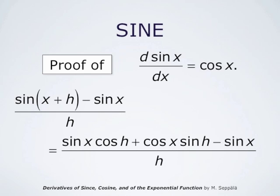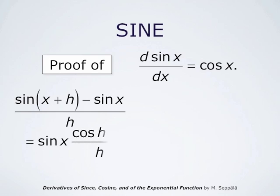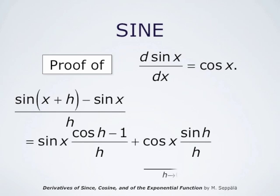In the numerator, we take sin x as a common factor of the terms sin x cos h minus sin x, leaving sin x times (cos h − 1) plus cos x times sin h, all divided by h. This can be written as sin x times (cos h − 1)/h plus cos x times sin h/h. We know sin h/h approaches 1 as h goes to 0, and (cos h − 1)/h approaches 0. Therefore the limit is sin x times 0 plus cos x times 1, which equals cos x.